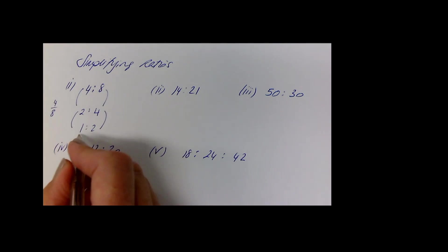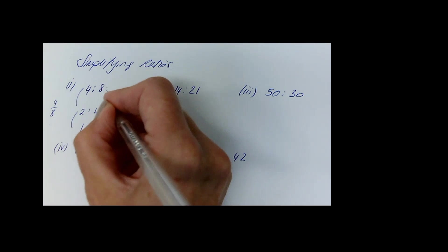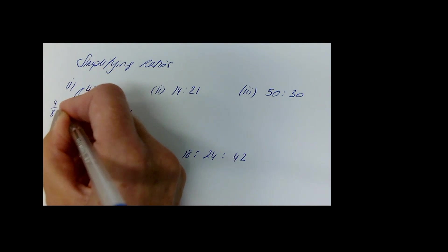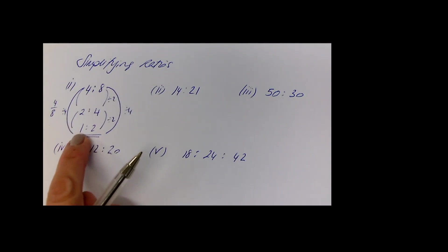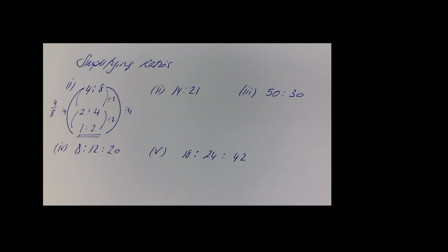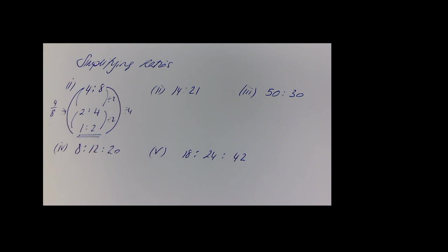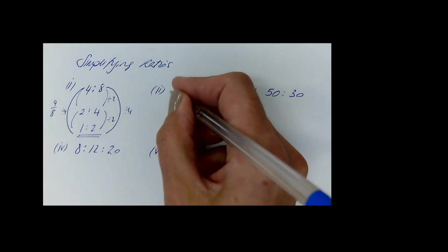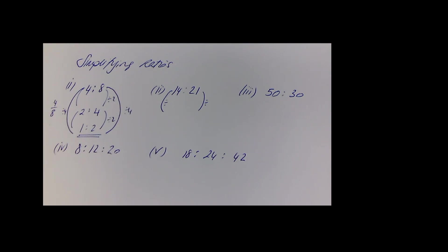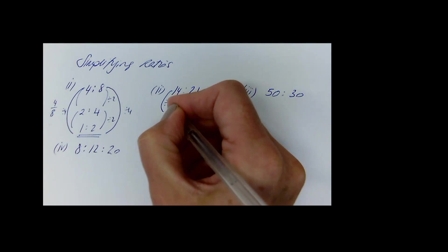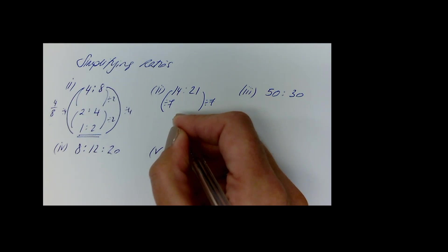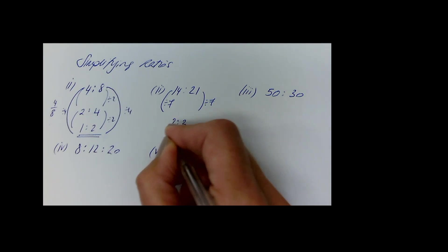You keep going until you can't simplify any further. You might spot straight away that rather than dividing by 2 twice, you could divide by 4 — the highest common factor — to get straight to 1:2. It doesn't matter if it takes a few steps. For 14:21, both are in the 7 times table, so dividing by 7 gives 2:3, which is the final answer.